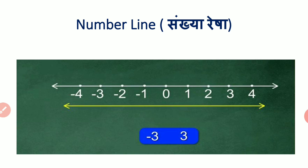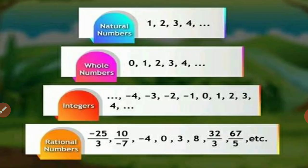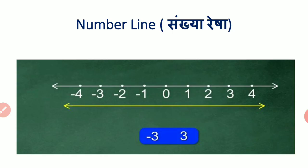Now, one more thing we have to know is the number line. What is meant by a number line? The line bearing the numbers in proper fashion is called a number line. Numbers are placed on the line in a specific order.